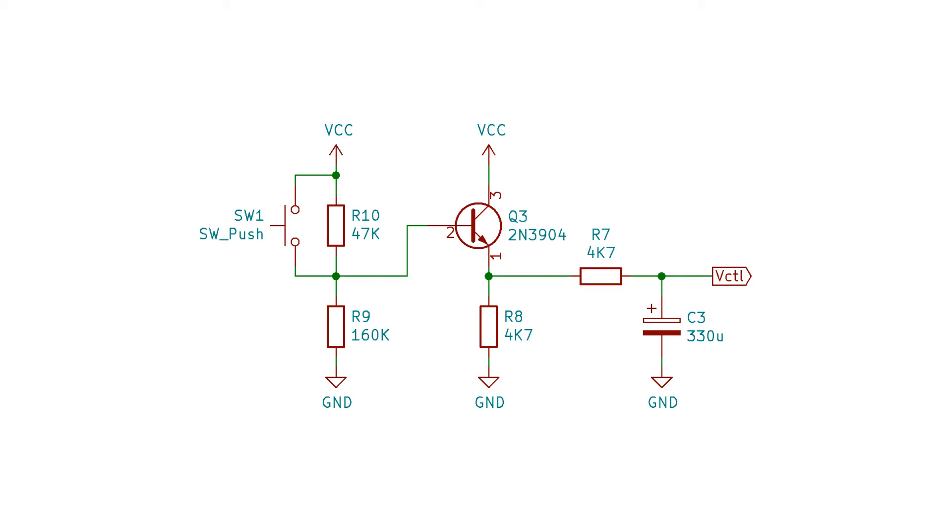Q3 is another emitter follower, so the voltage at its emitter will be either nearly 5V when the switch is pressed, or a mid-range voltage when the switch is not pressed. C3 then charges or discharges to slowly converge on this target voltage, and this is fed to the VCO.